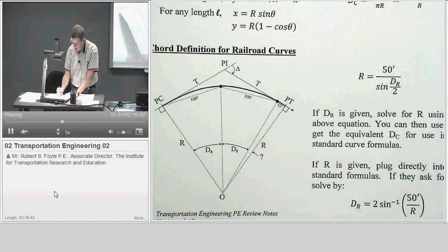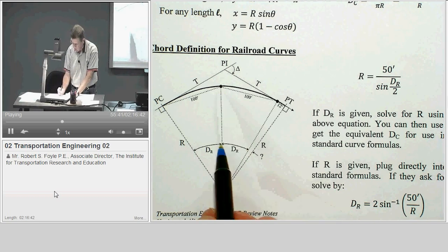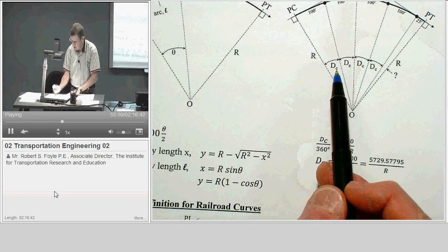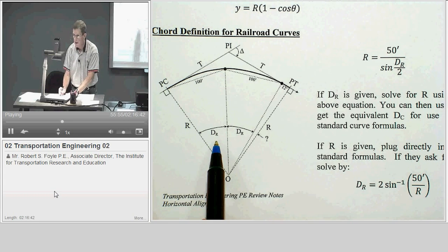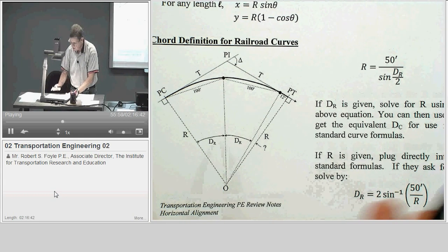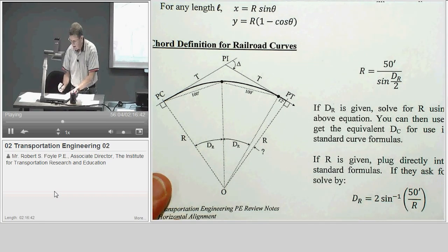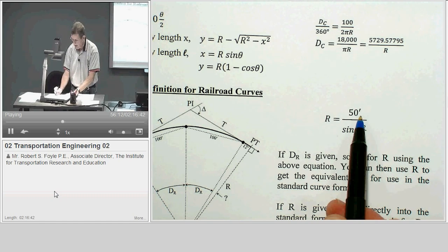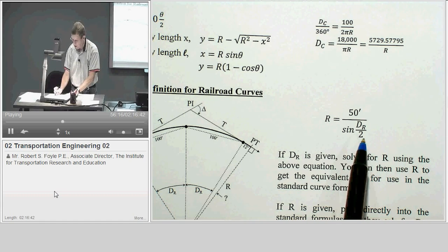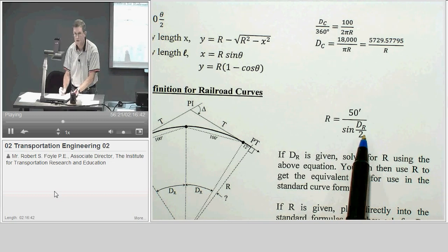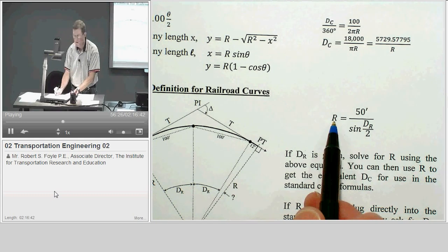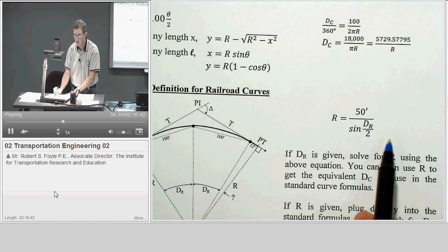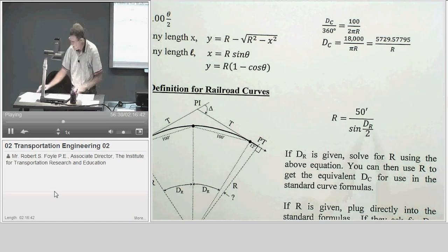I've got 100 feet of chord right here. I've got a degree of curve, and I call that the degree for the railroad. Instead of degree for a circular curve for highways, this is degree for a railroad. Many people don't make that distinction and just use capital D for both. So I'm just trying to be clear in nomenclature. If I do that, the relationship that I get is the radius is equal to 50 feet divided by sine of the degree of curve divided by 2. That will calculate, if I'm given degree of curve for a railroad, I can calculate its radius and then use that in all my regular simple curve formulas.